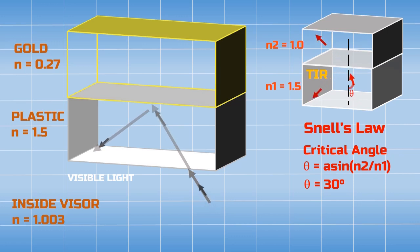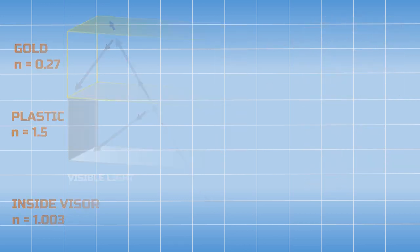So in the case of a visor also, since the refractive index of plastic is very high compared to gold and light travels from plastic to the gold film, very little light can pass to the gold layer and further out of the visor.